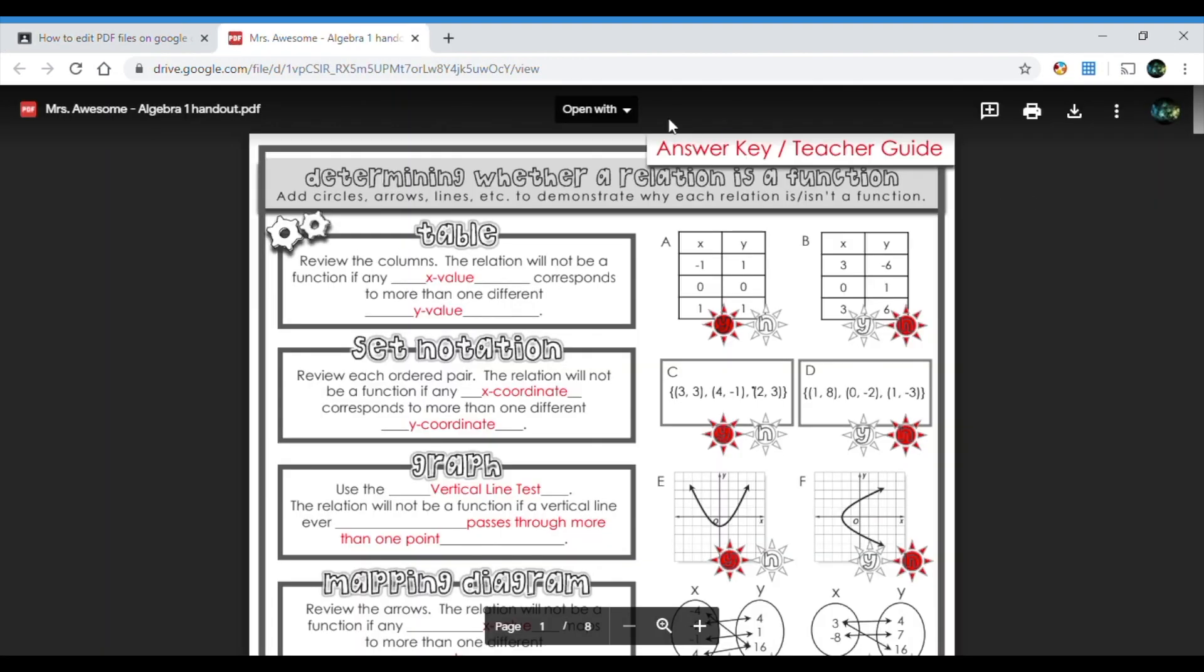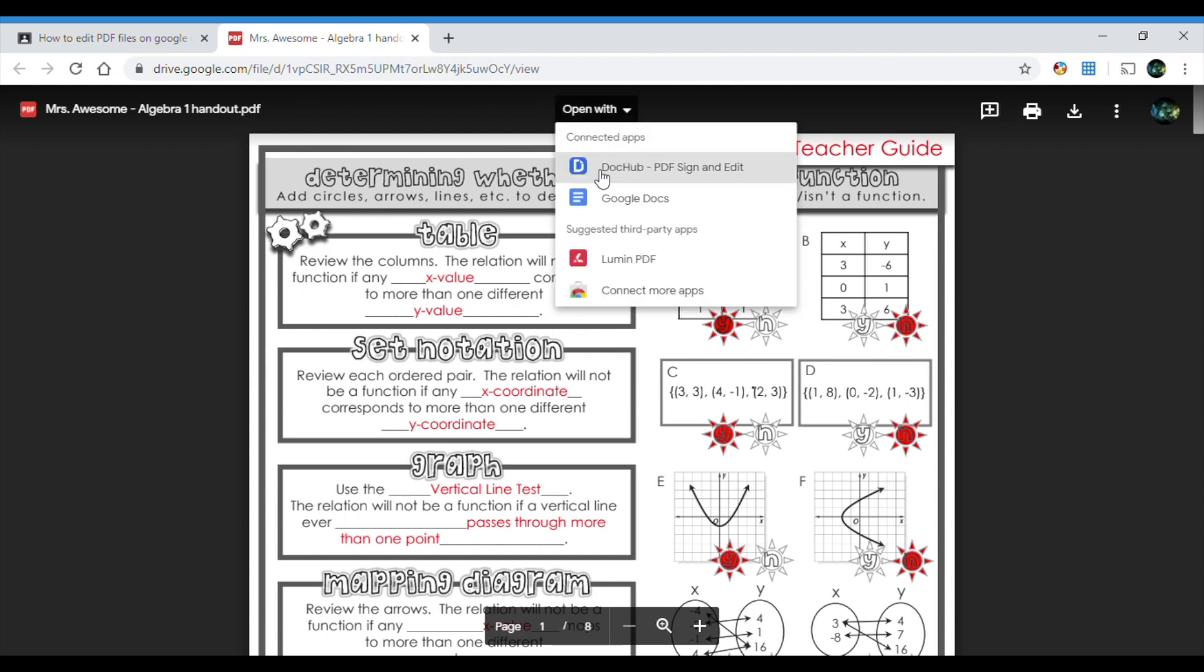This is gonna give us the special feature right here. Open with is a drop down menu. Please make sure that you have open with with a drop down menu. So when I click on it I'm gonna look for this guy right here. DocHub PDF sign and edit. So click on that and it's gonna take you to a page.